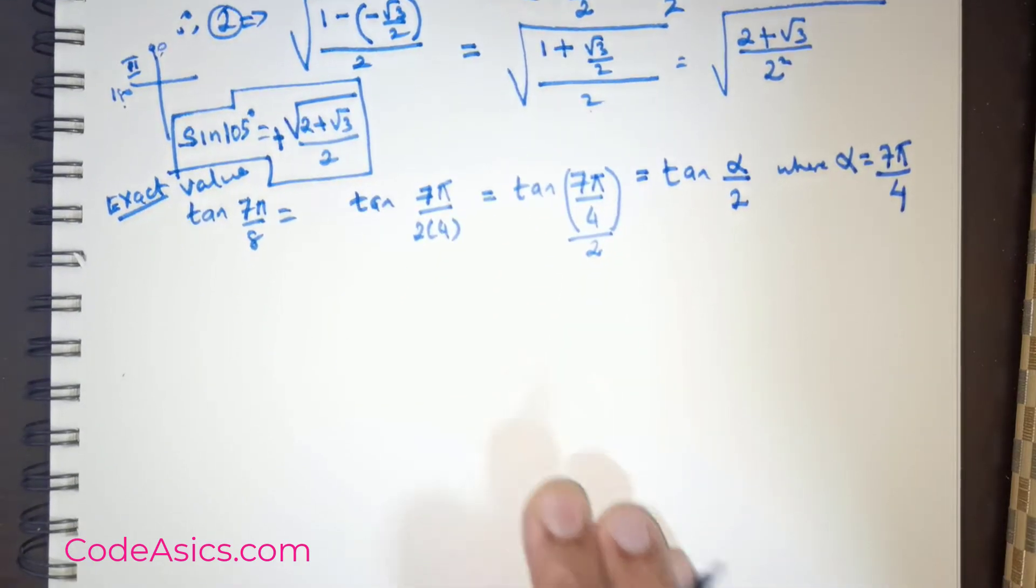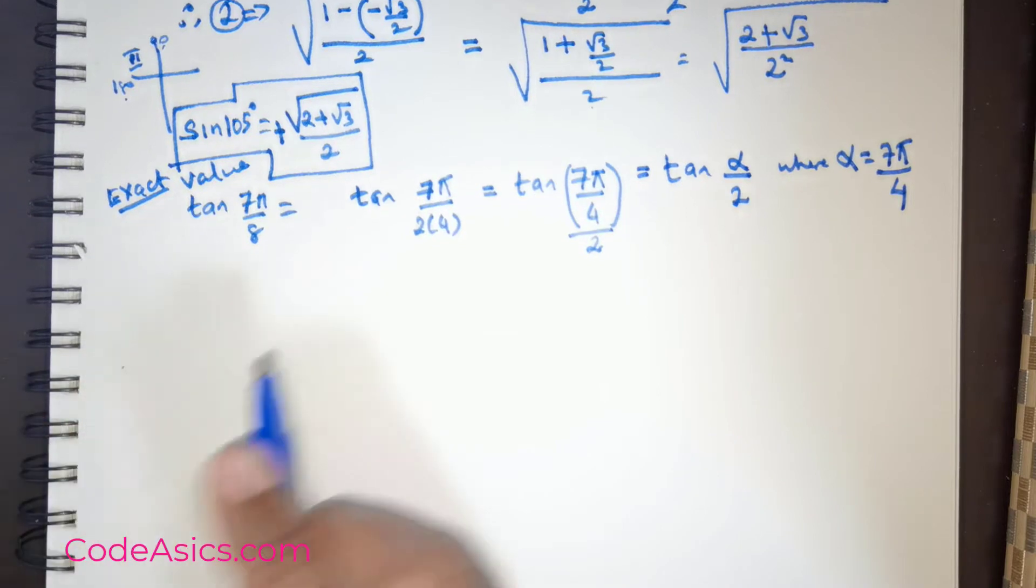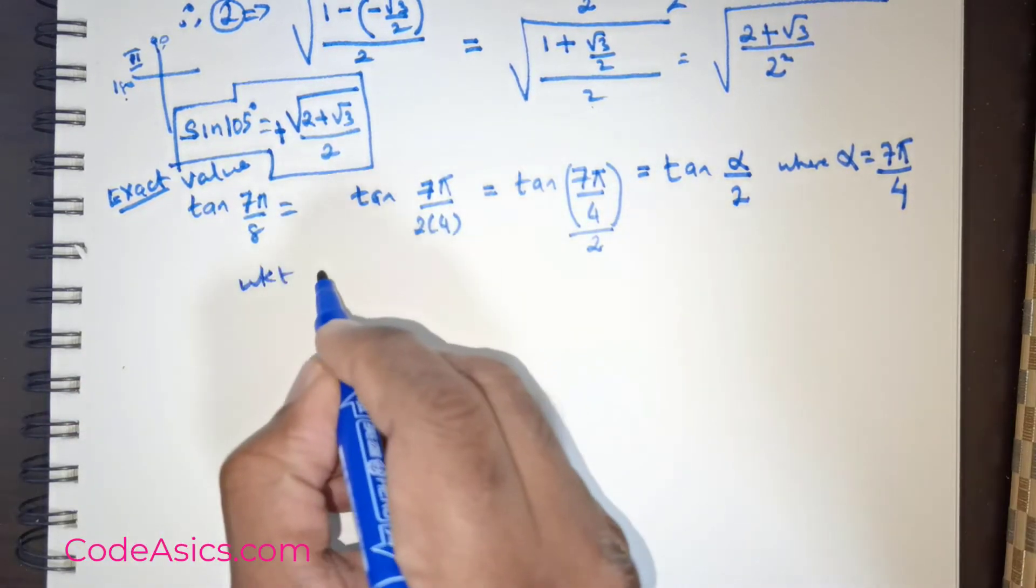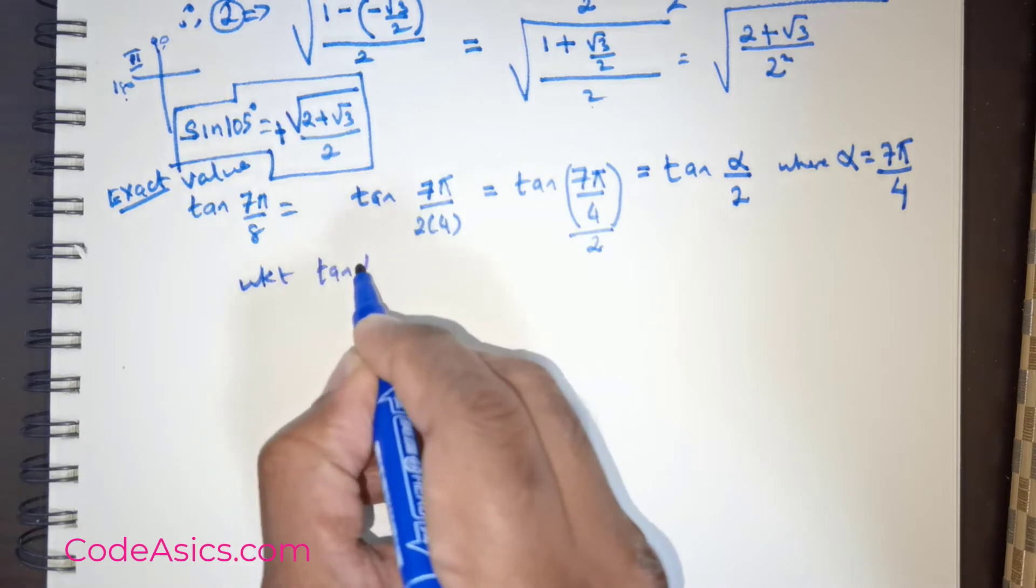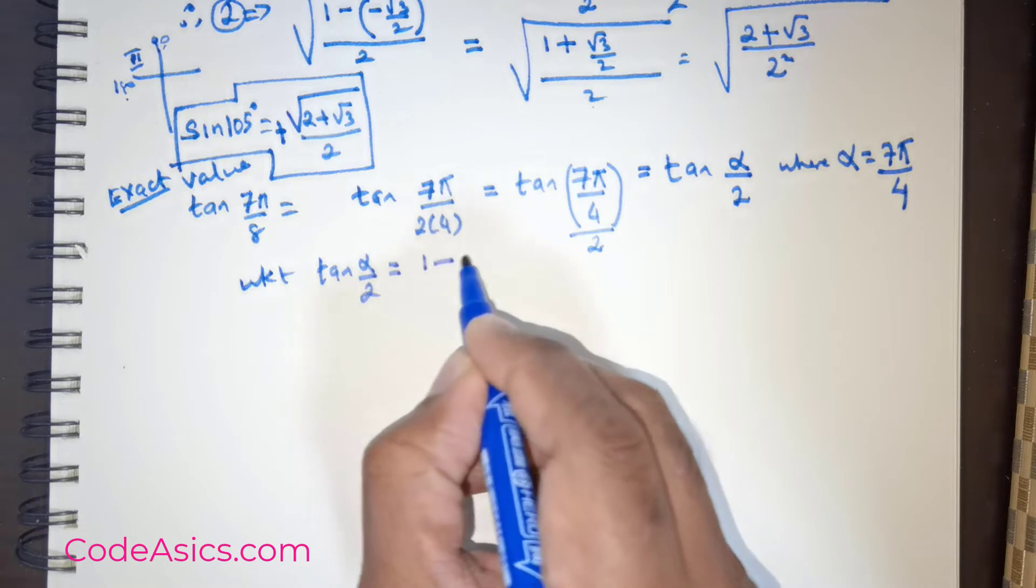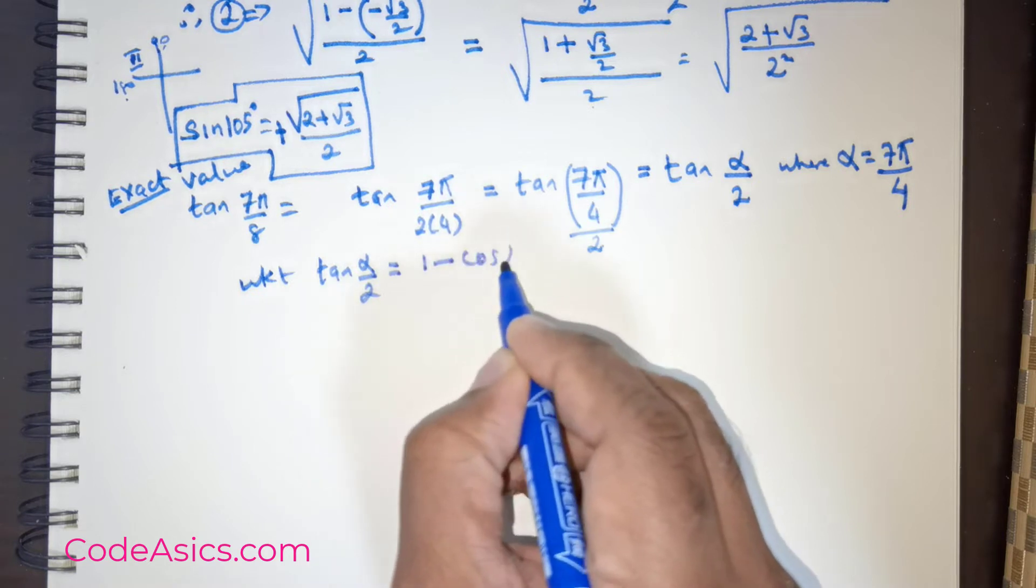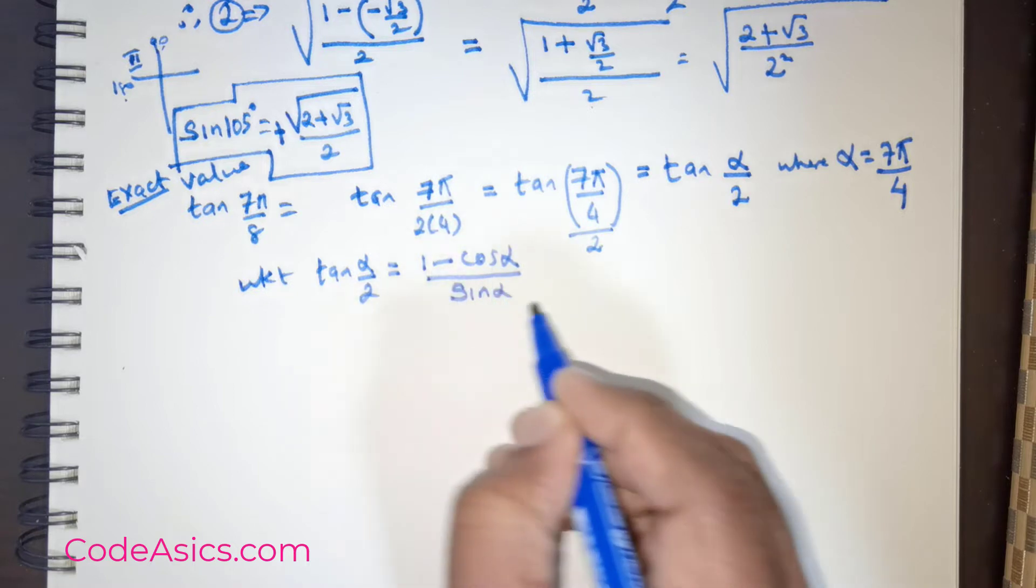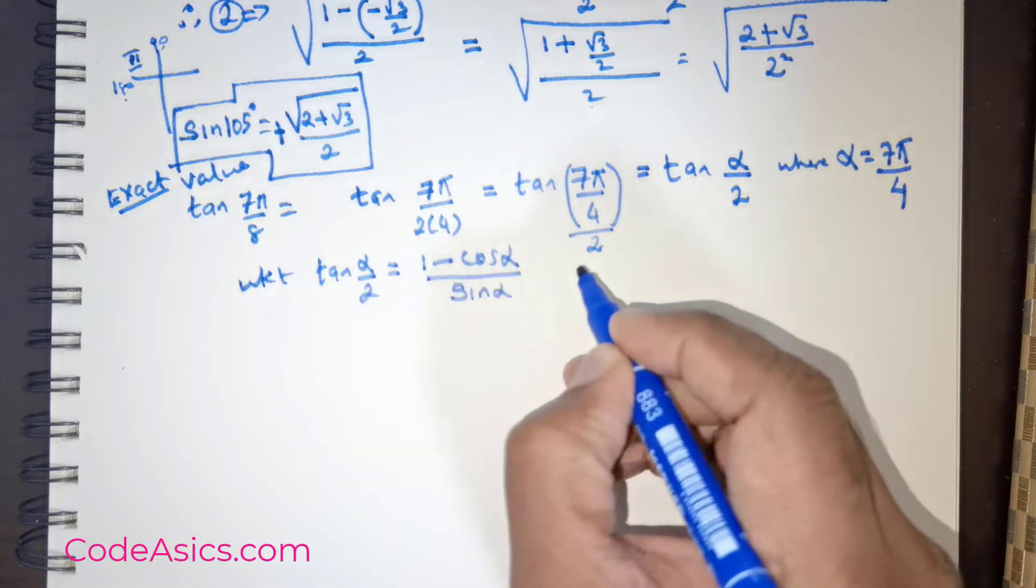Now it's time for us to write the formula for tan α/2. We know that tan α/2 equals 1 minus cos α divided by sin α. This is the half-angle formula for tan α/2.